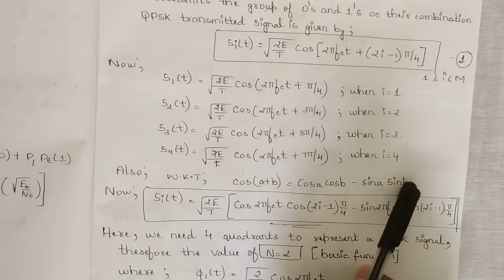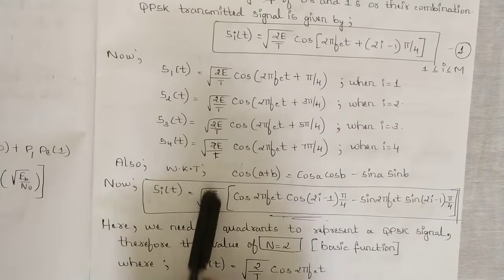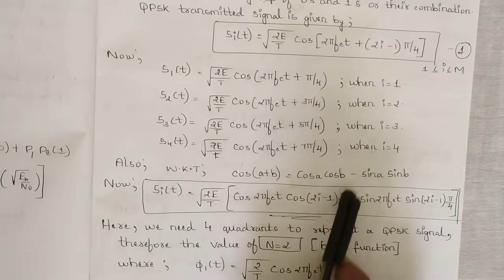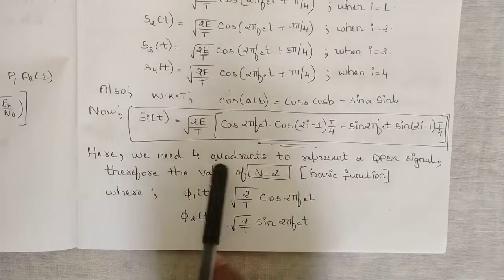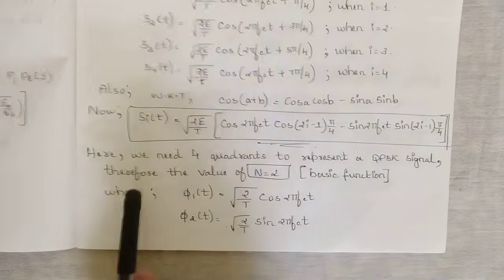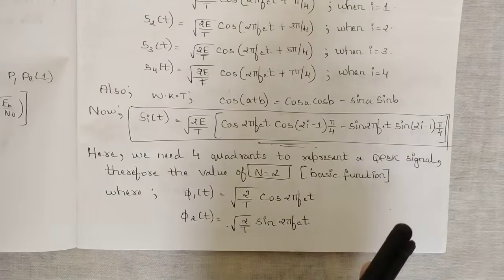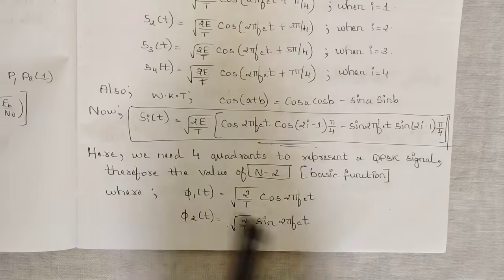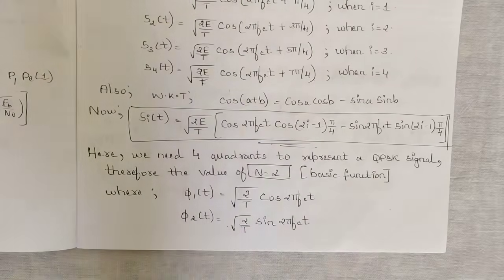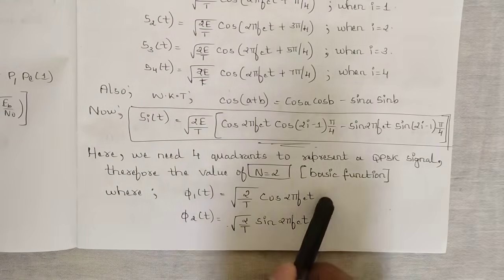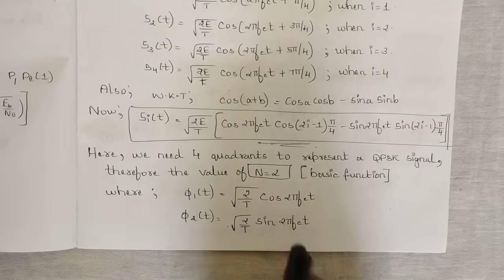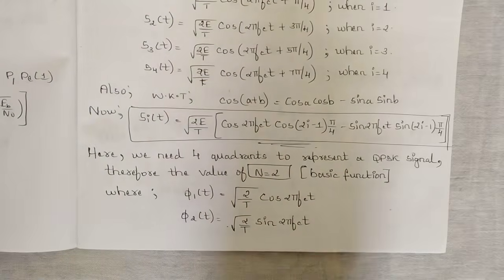Using the identity cos(A+B) = cosA·cosB − sinA·sinB, si(t) expands to: sqrt(2E/T) * [cos(2π·fc·t)·cos((2i−1)·π/4) − sin(2π·fc·t)·sin((2i−1)·π/4)]. We need two basis functions for QPSK: φ1(t) = sqrt(2/T)·cos(2π·fc·t) and φ2(t) = sqrt(2/T)·sin(2π·fc·t), since they are opposite in phase. In BPSK we had only one basis function, but QPSK uses two.